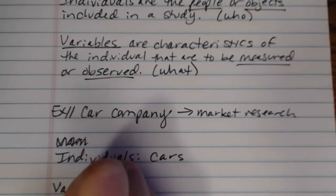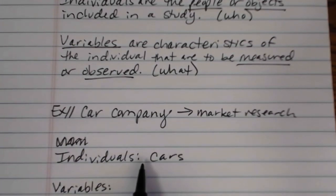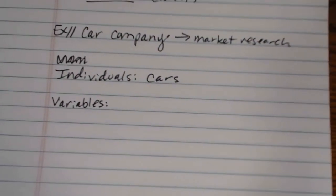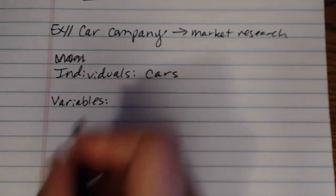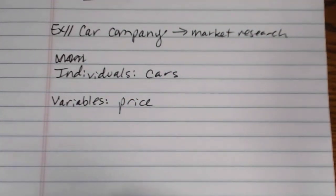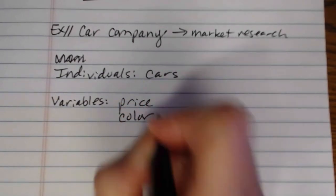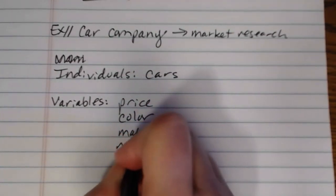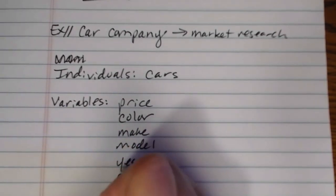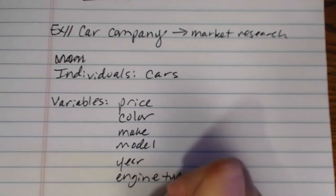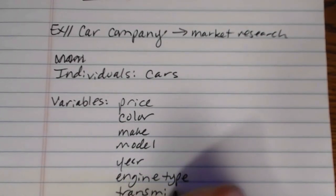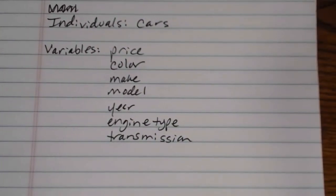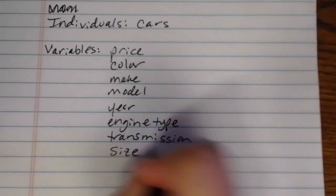Now the variables are not the cars themselves. They're the things that we might be measuring about the cars. So if we wanted to do some market research to figure out the kinds of things that people typically look for when they're trying to determine a car to buy, there are a bunch of different variables that we could measure. We could measure price. We could measure maybe the color. And this would be more observed rather than measured. But price, color, make, model, year, engine type, transmission. Is it an automatic or is it a manual? Size. All of these kinds of things.